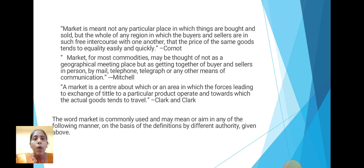Such that the price of the same goods tends to equality easily and quickly. — Cournot. Market for most commodities may be thought of not as a geographical meeting place, but as a getting together of buyers and sellers by mail, telephone, telegraph, or any other means of communication. — Mitchell. A market is a center about which, or an area in which, the forces leading to exchange of title to a particular product operate and towards which the actual goods tend to travel. — Clark and Clark.